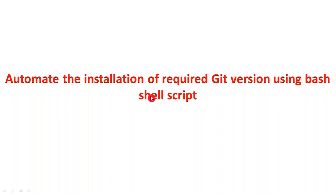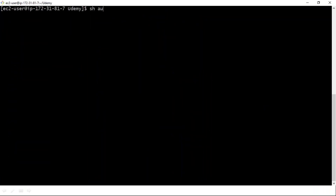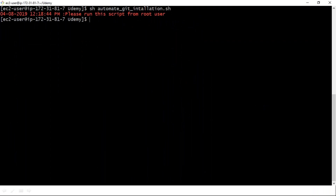Whatever steps you need for the installation of Git, I've already taken care of inside my shell script. If you want to install by using configure, compile, and install, you should have root privileges or be the root user. Let me open my shell script — I already implemented it. I'm running the script and it's saying: please run this script from the root user. Let me enter into root.